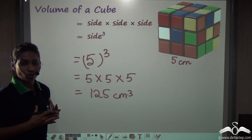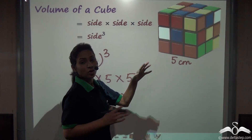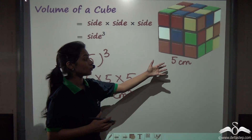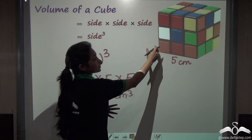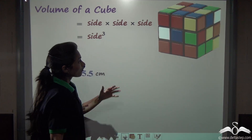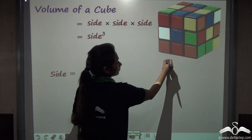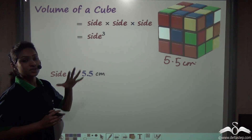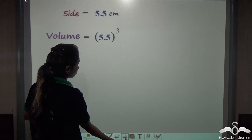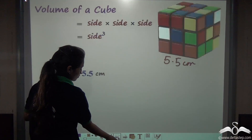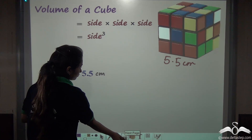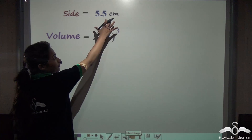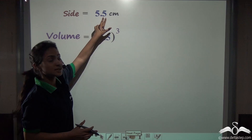It may not always be the case that you get a whole number as the length of any side of a cubic object. It may be a fraction or a decimal — say the length of the side of this Rubik's cube is 5.5 centimetres. Then how will you find out the volume of this Rubik's cube?